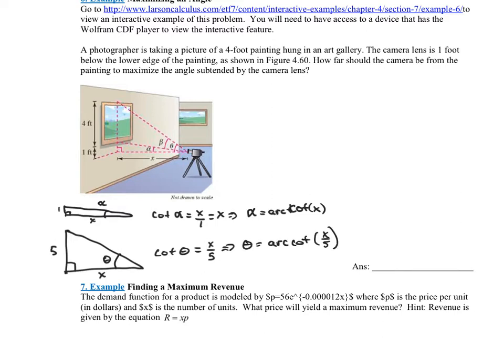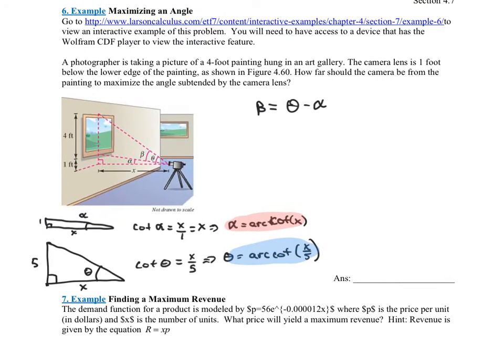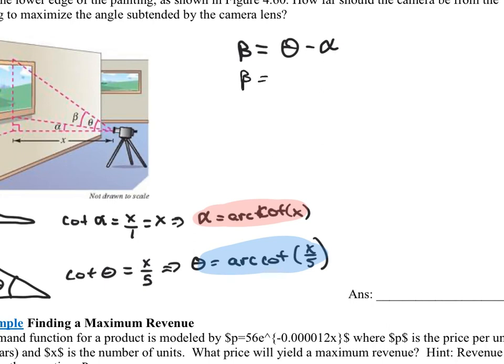And what do I want to do? I want to maximize beta. Well, think about what beta is — beta is the big angle theta minus the small angle alpha. But we've already solved for alpha and theta. So beta equals arc cotangent of X over 5 minus arc cotangent of X. That would be theta minus alpha.